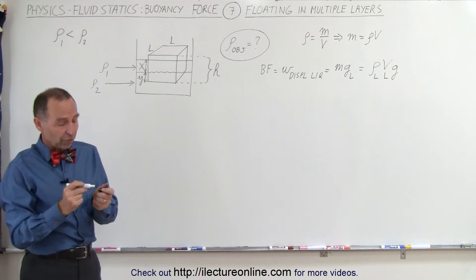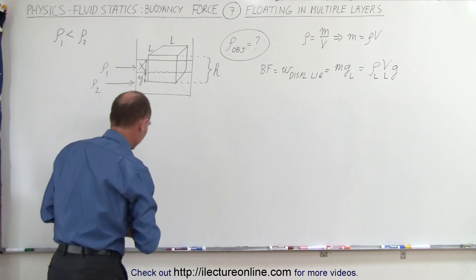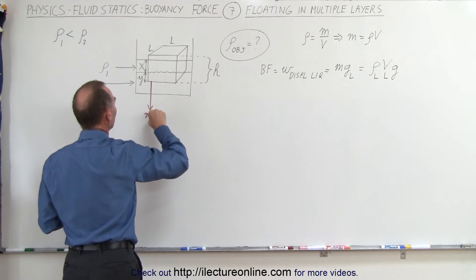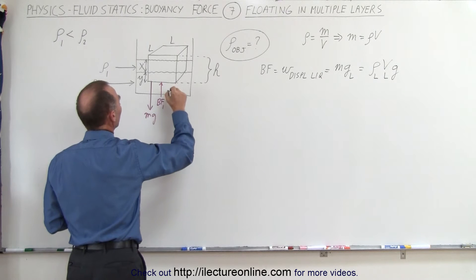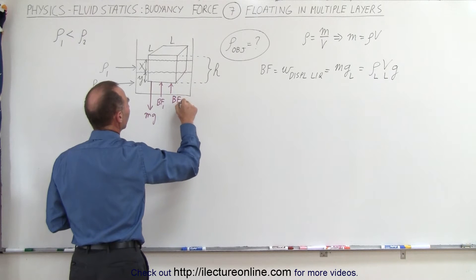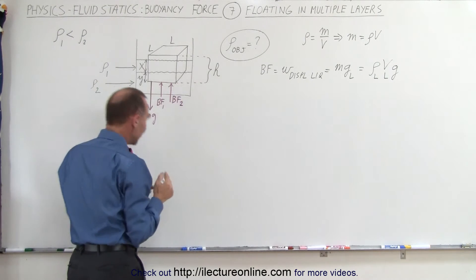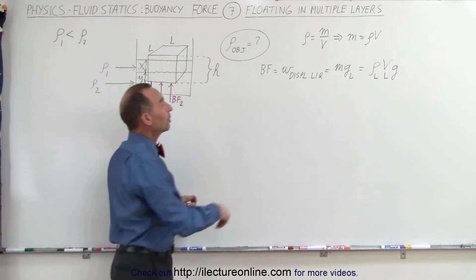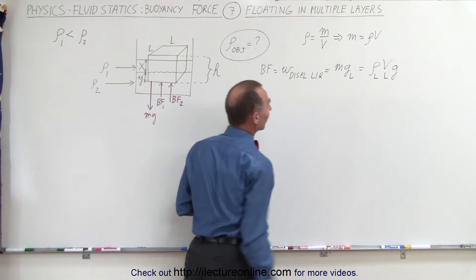Since there are two different layers of liquid with two different densities, there must be two different portions of the buoyancy force. We have the weight of the object mg, buoyancy force BF1 from the first layer, and buoyancy force BF2 from the second layer. BF2 is probably greater than BF1 because the second layer has greater density, giving a greater weight of displaced liquid.